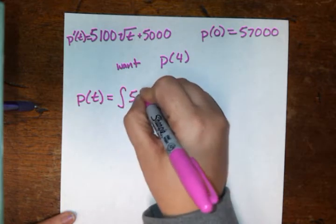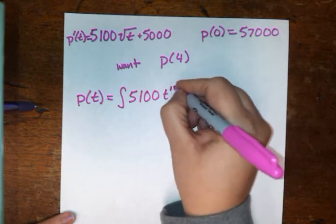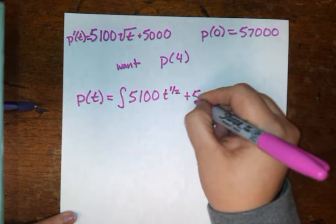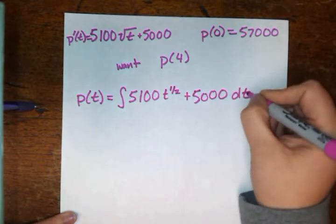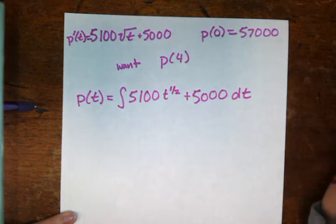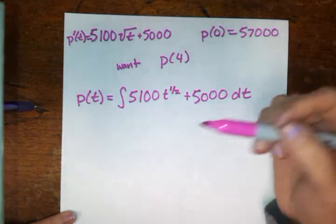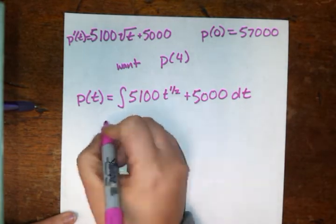It's going to be the integral of 5,100 times the square root of t. I'm going to change that to t to the one-half right now, just to make it easier to work with, plus 5,000 dt, because our variable that we're working with is a t here. So we want p of four, but before we can get p of four, we've got to figure out what p is in the first place. So let's take this integral.